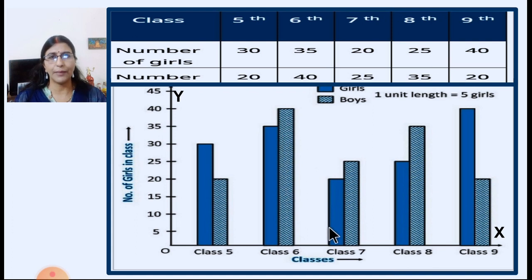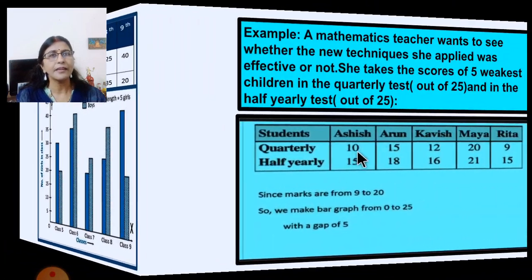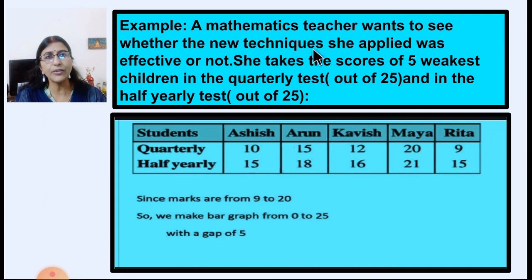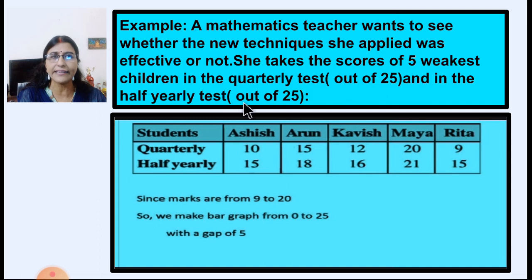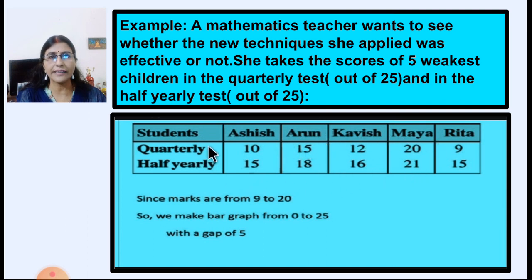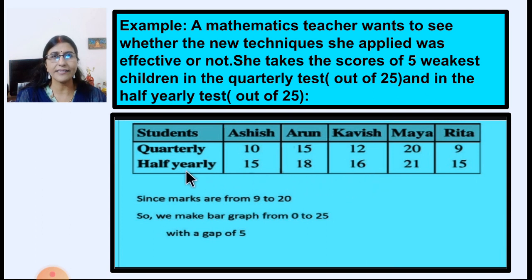This kind of bar graph is normally used for comparing numbers — for comparing marks, a double bar graph is used. Let us take one more example. A mathematics teacher wants to see whether the new technique she applied was effective or not. She takes the scores of 5 weakest children in the quarterly test out of 25 and in the half-yearly test out of 20. We are going to plot a double bar graph based on this data.